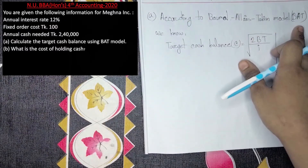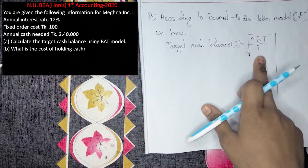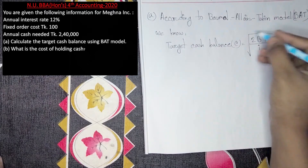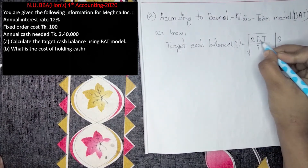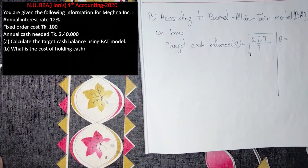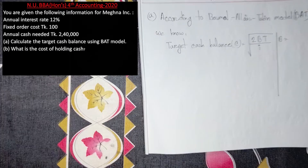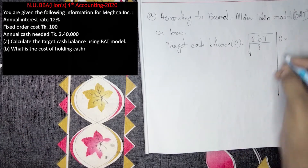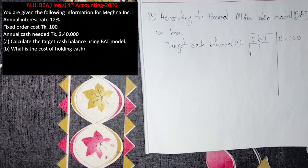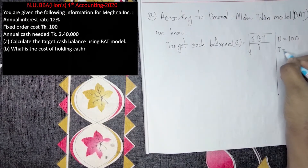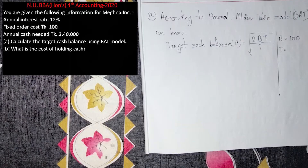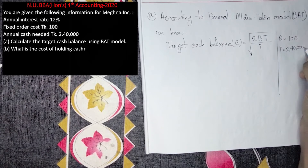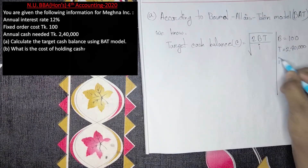So that model is: target cash balance = √(2TB/I). Where B is the transaction cost per transaction — the fixed order cost of 100. T is the annual cash needed — 2,40,000. And I is the interest rate.